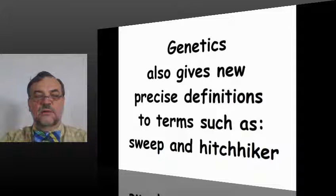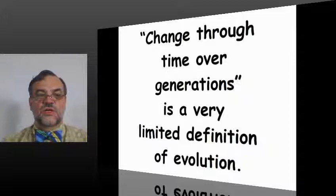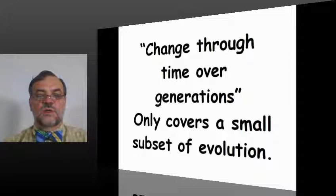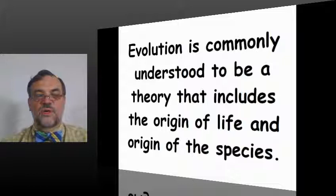So what is evolution? Dr. Noor gives this definition: change through time over generations. Change through time over generations is a very limited definition of evolution. Change through time over generations only covers a small subset of evolution. Evolution is commonly understood to be a theory that includes the origin of life and origin of the species.